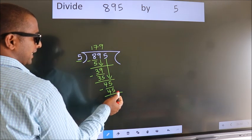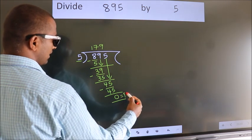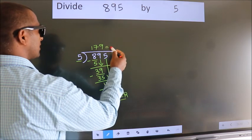No more numbers to bring it down. So, we stop here. This is our remainder. This is our quotient.